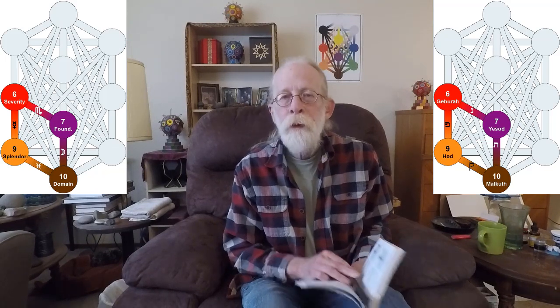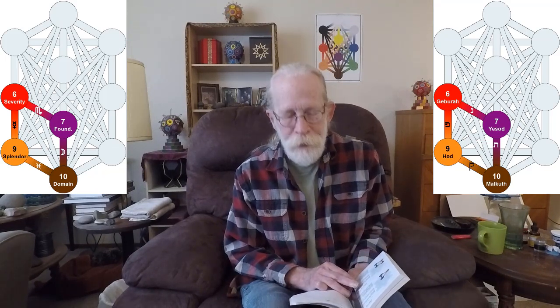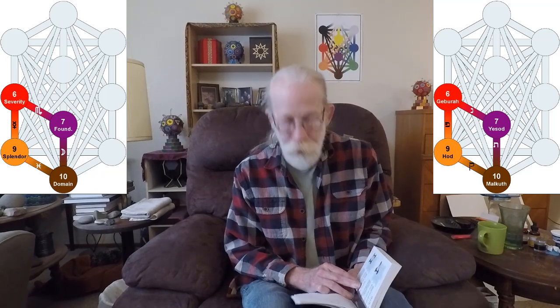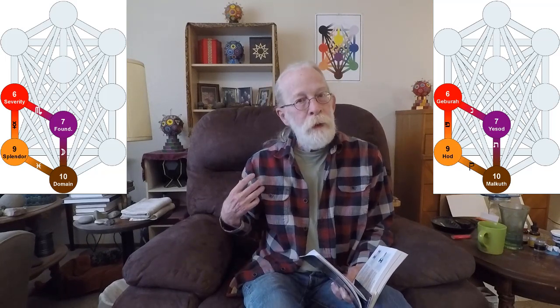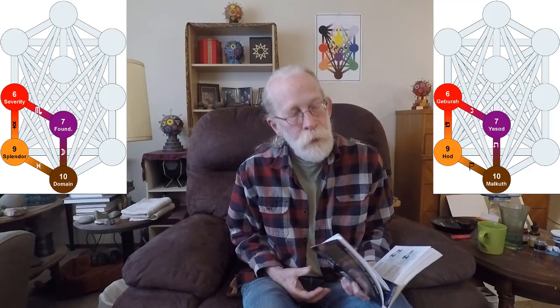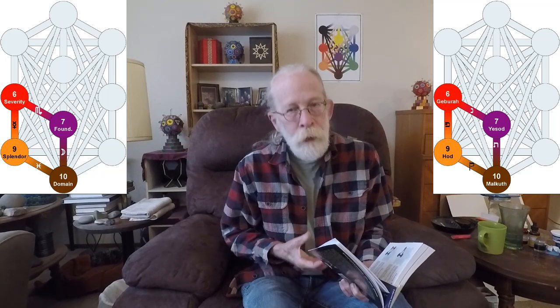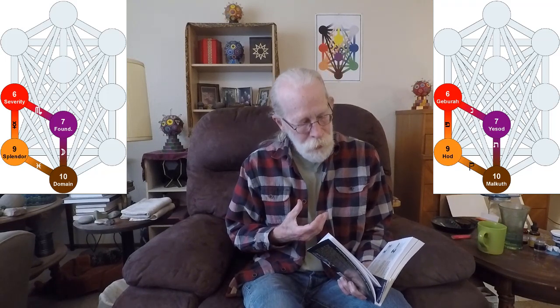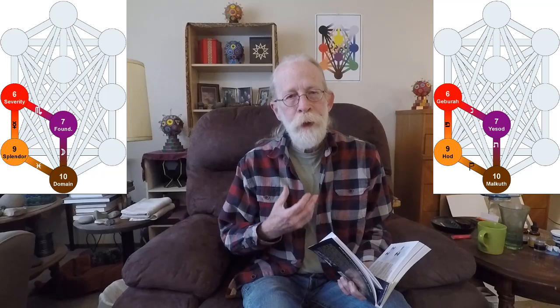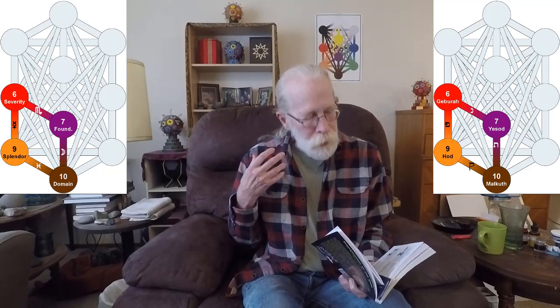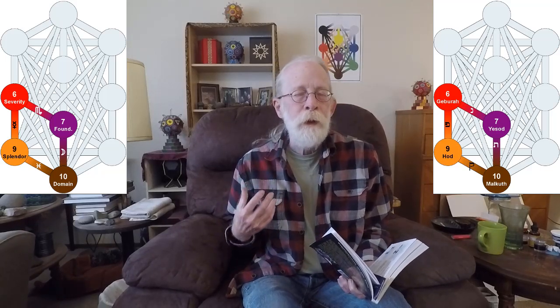The next gate is a quadrangle, and it's gate 168, and it goes from Hod down Pisces to Malkuth, up the moon to Yesod, up Scorpio to Gebura, and down Mercury to Hod.